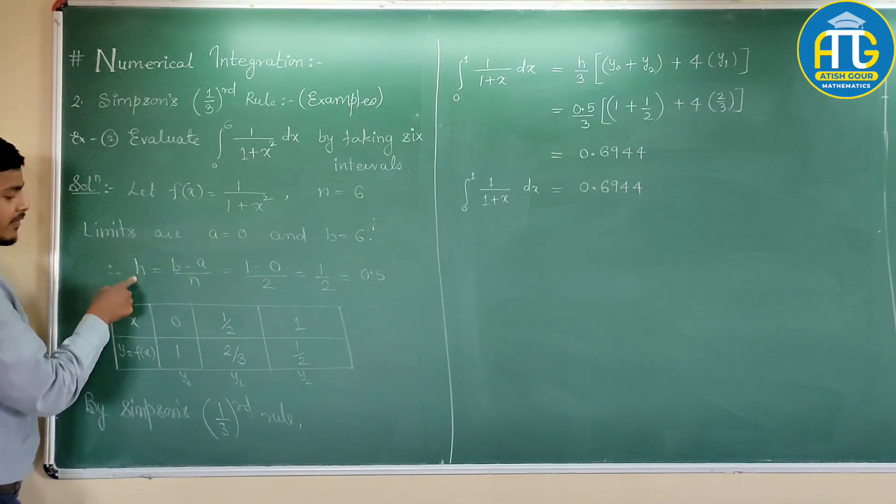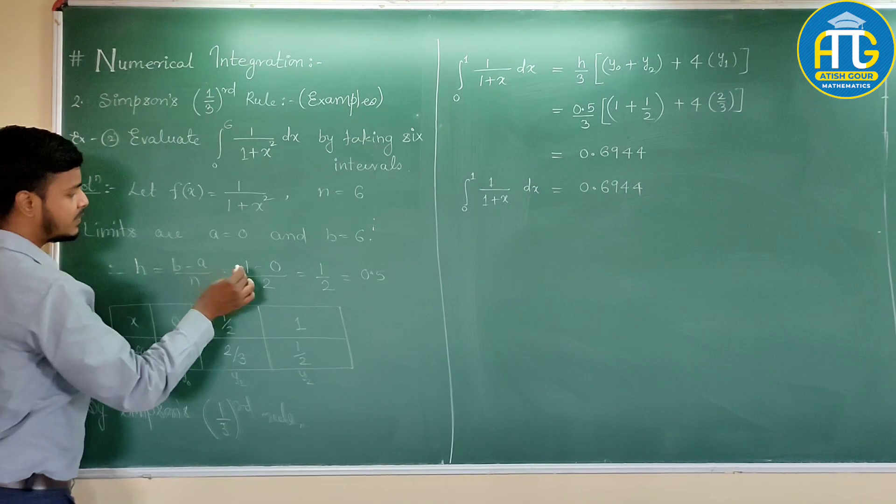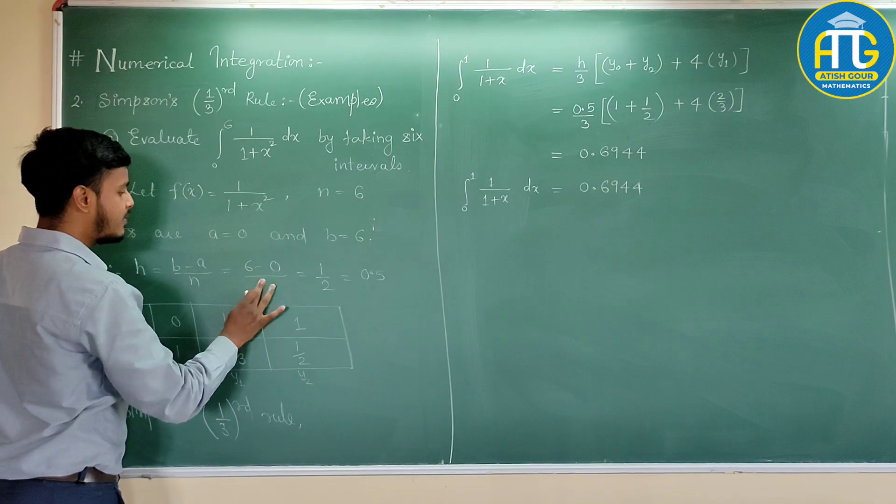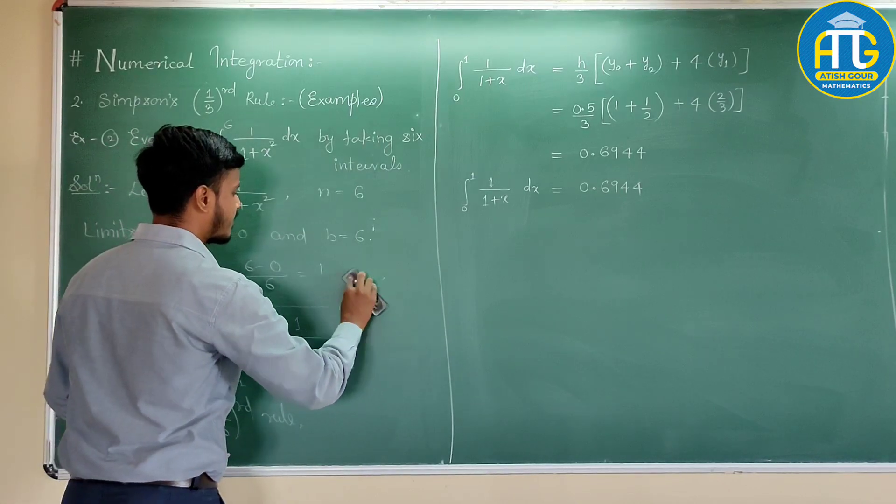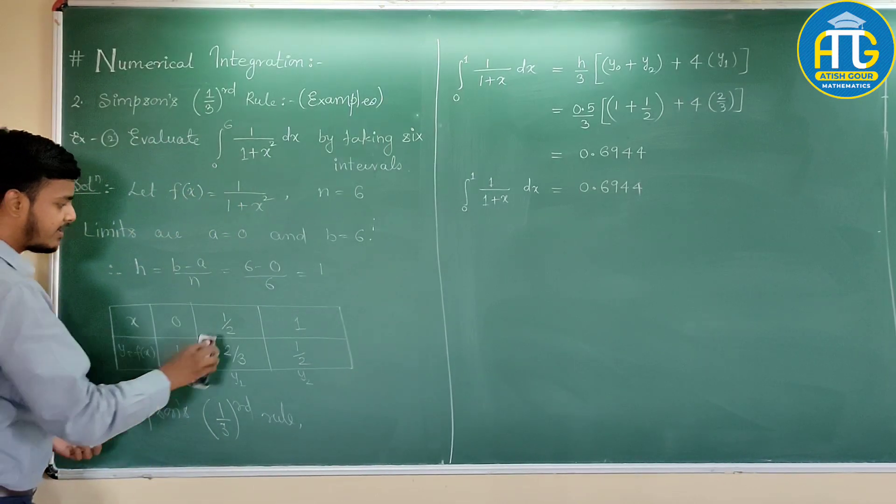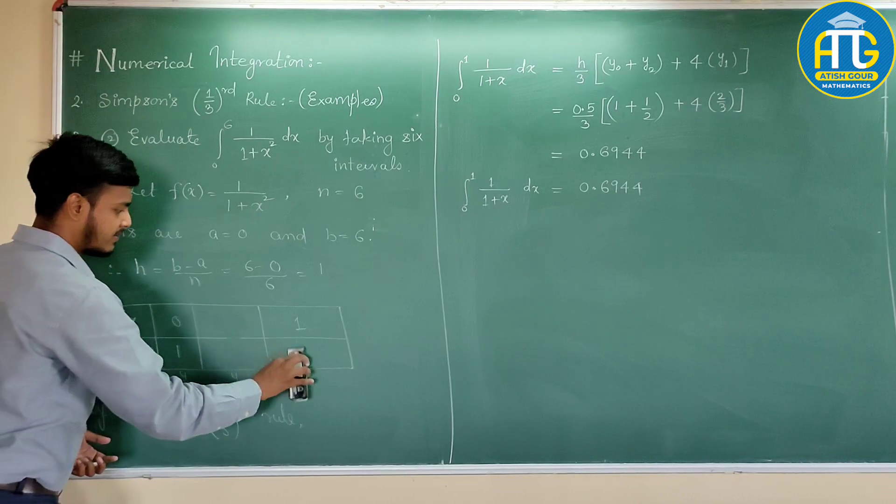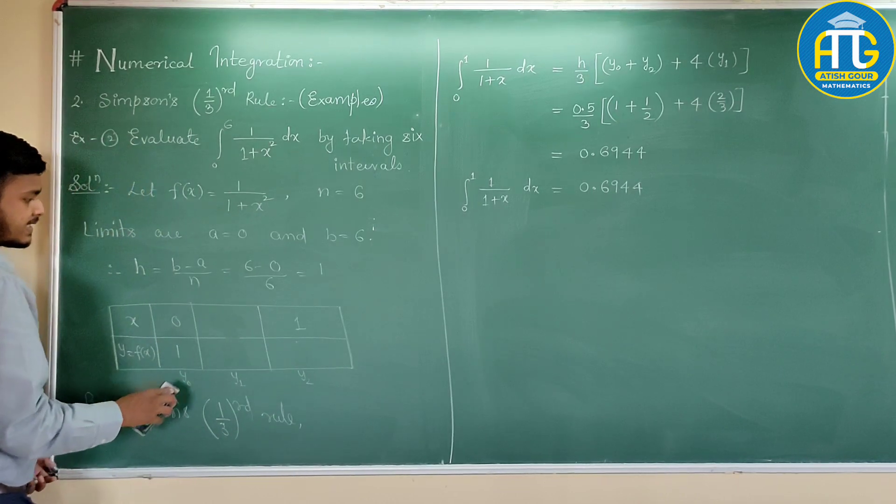Let us find out the interval of differencing. h is equal to 6 minus 0 by n is 6. So this comes out to be 1. So we have here how many intervals? 6 intervals.